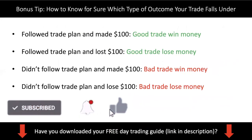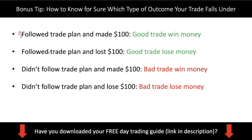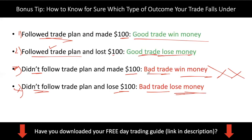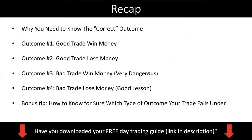Let me run through four examples. Scenario one: you followed your trading plan and made $100 — this is a good trade that wins money. Number two: you followed your trading plan and lost money — still a good trade because you followed the plan. Number three: you didn't follow the trading plan, and you made $100 — this is a bad trade that wins money, a bad thing you shouldn't be having in your trading journal. Number four: you didn't follow the trading plan and you lost $100 — this is where you want to avoid it, take the lesson, and not repeat this mistake. So hopefully this lesson has been helpful. Really analyze your trades and try to stick to outcome one and outcome two.